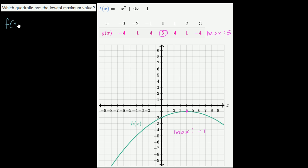We have f(x) = -x² + 6x - 1. I don't like having this negative here, so I'm going to factor it out. This is the same thing as -(x² - 6x + 1).